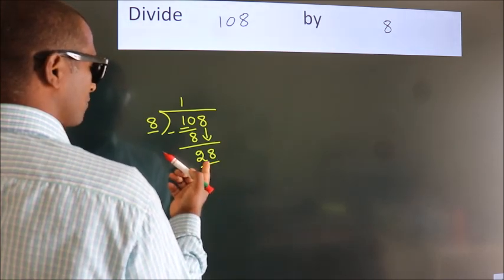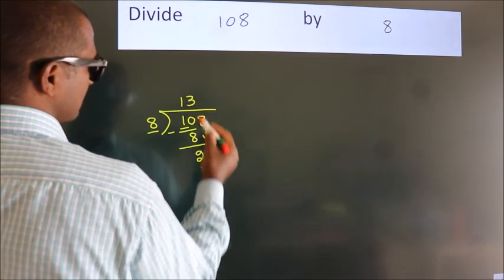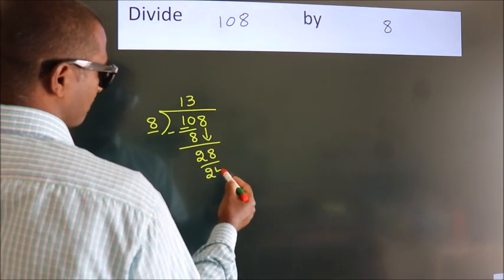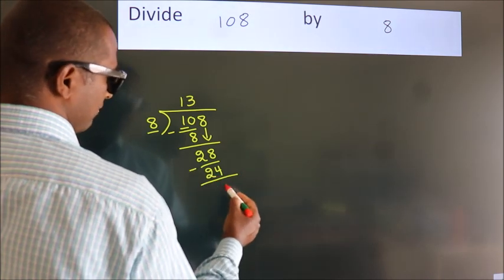A number close to 28 in the 8 table is 8 threes 24. Now we subtract. We get 4.